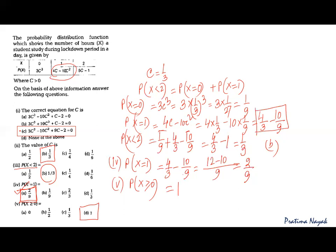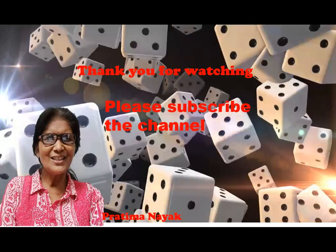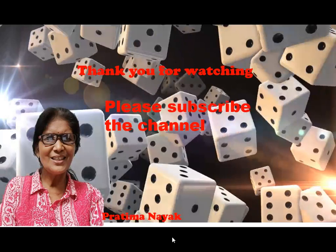So we got all answers. Part 1: the equation is 3c³ − 10c² + 9c − 2 = 0, derived using the fact that the sum of all probabilities equals 1. Part 2: using the factor theorem, we found c = 1, c = 2, and c = 1/3 — the valid answer is c = 1/3. Part 3: P(X < 2) = 1/3. Part 4: P(X = 1) = 2/9. Part 5: P(X ≥ 0) = 1. Thank you for watching. Please subscribe to the channel to learn more.